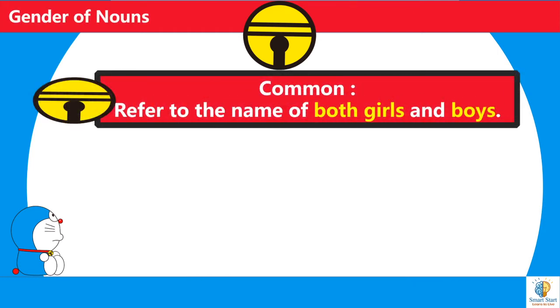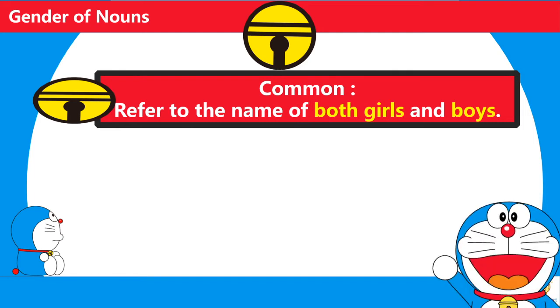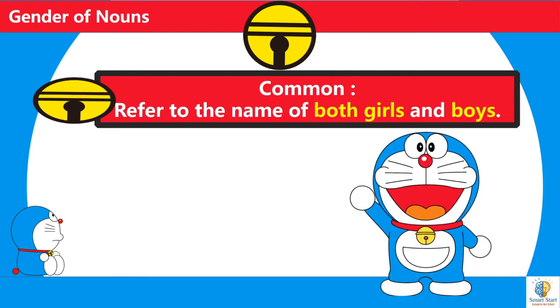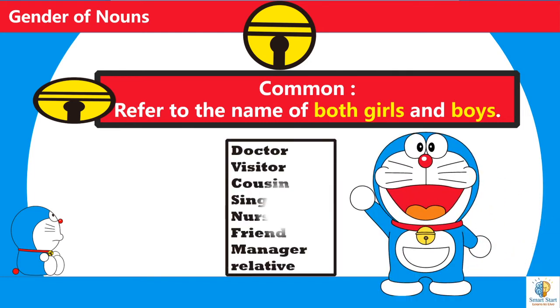Common refers to the name of both girl and boy. For example: doctor, visitor, cousin, singer, nurse, friend, manager, relative.